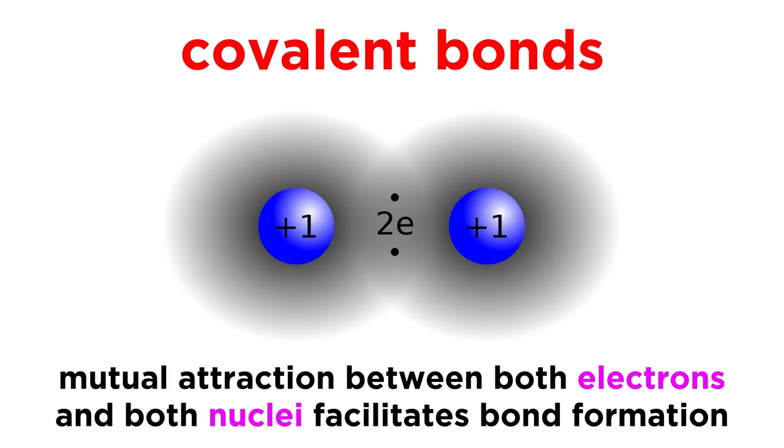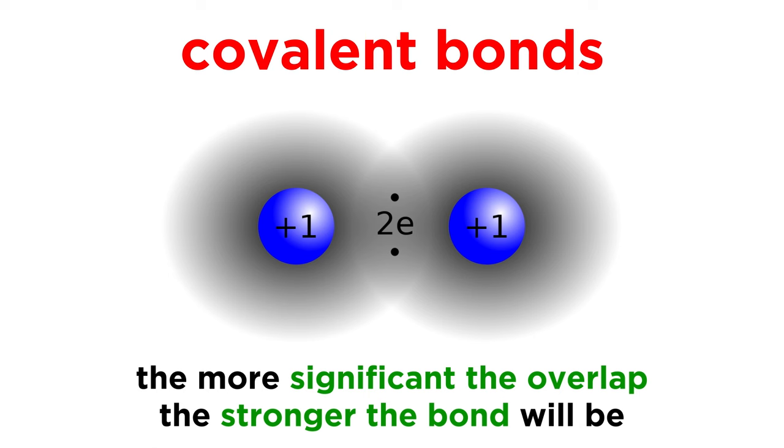It is the mutual attraction between both electrons and both atomic nuclei that facilitates this link. And the more significantly these orbitals overlap, the stronger the covalent bond will be, and the lower the potential energy will be for the system.